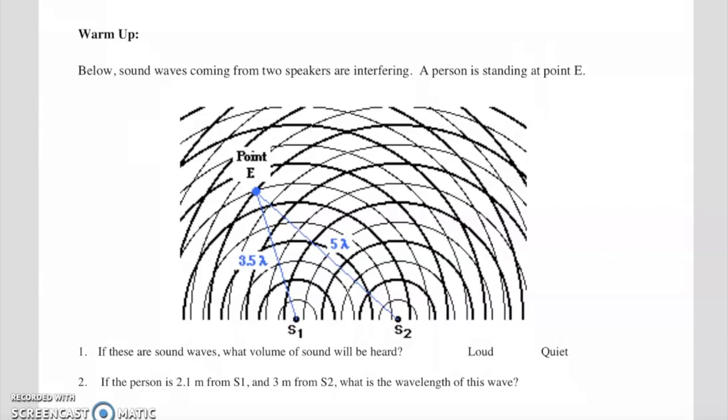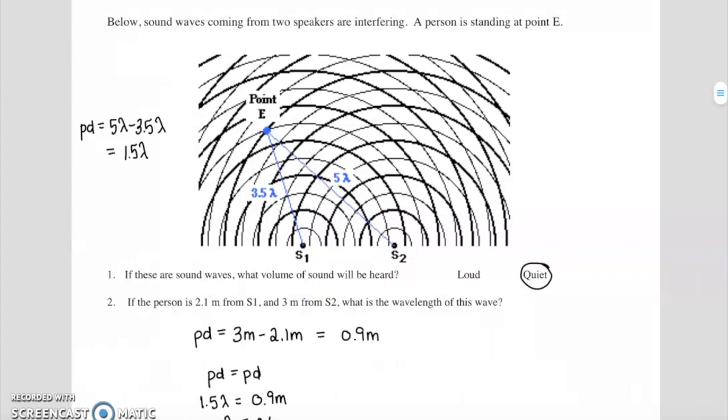Checking your answer, you should have predicted that this would be a quiet spot. Noticing that the path length difference of 5 lambda minus 3.5 lambda yields a path length difference of 1.5 lambda, we know that any half wavelength multiple is going to be destructive interference, destructive corresponding to a quiet spot.